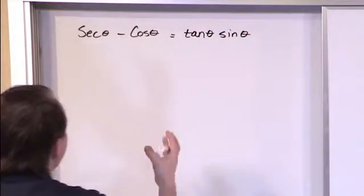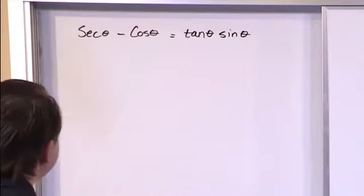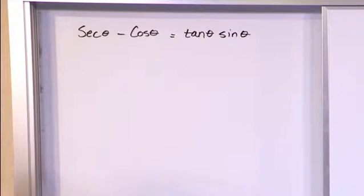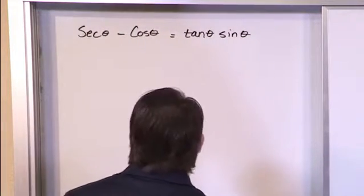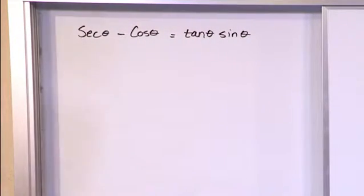Now again this is an identity. You know it's true so you just need to manipulate the left hand side into making it true. Now again there's no right way to do them. There's lots of different ways to do them. You just need to make sure you understand every single step.